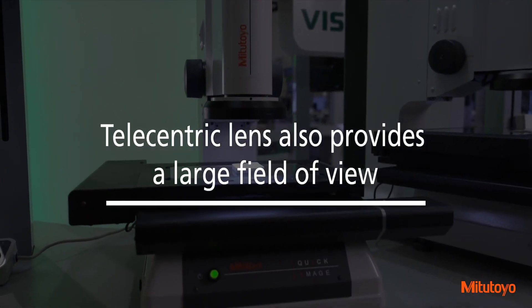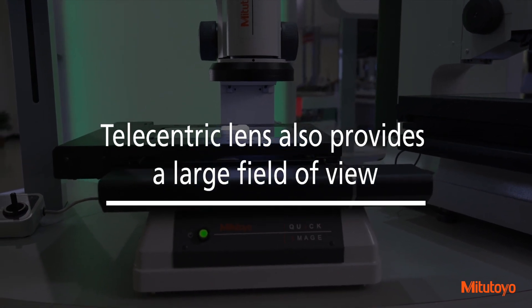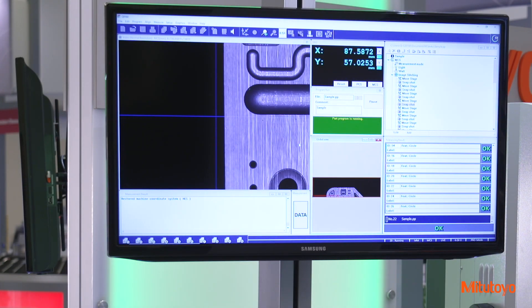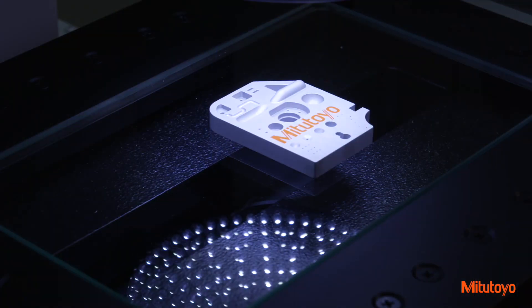The telecentric lens also provides a large field of view, allowing easier inspections of larger workpieces in a compact space. The stitching function couples multiple images together, while maintaining high-accuracy measurements that are easily processed without the need to move the stage.